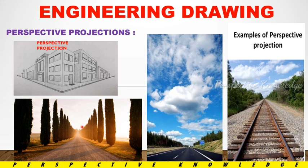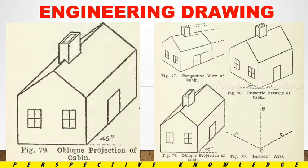Perspective Projection: when you look at an object, lines converge to a point — that is Perspective Projection. Next is Oblique Projection: one axis is at 0 degrees and the other axis is at a 45-degree angle. That is Oblique Projection.